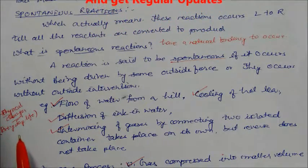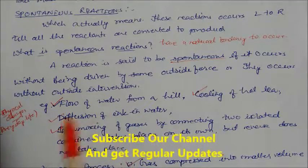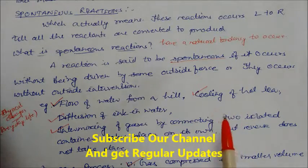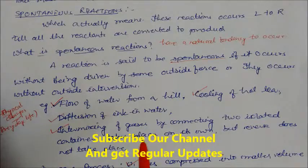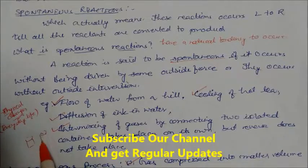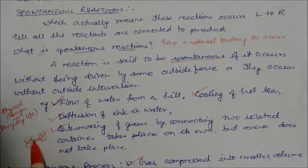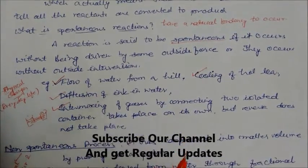For example, some everyday life examples: flow of water from a hill — we don't require force, the water will flow downward automatically. Cooling of hot tea — if you keep hot tea in open condition, it will become cool without any intervention. This is a spontaneous process. Diffusion of ink in water — you put ink in water and it will dissolve. Intermixing of gases by connecting two isolated containers also takes place on its own — this is also a spontaneous process.